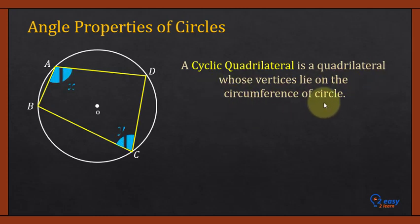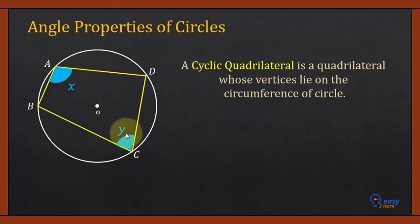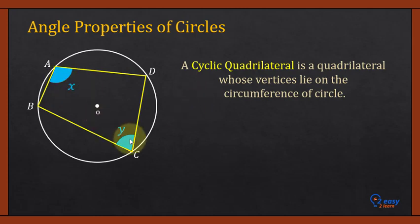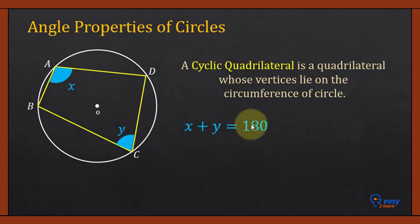A cyclic quadrilateral is a quadrilateral whose vertices lie on the circumference of the circle. Angle A, represented by x, and angle C, represented by y, are opposite angles. In a cyclic quadrilateral, the sum of opposite angles is always 180 degrees, so x plus y equals 180 degrees. If you know one angle, subtract it to find the other.